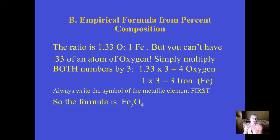What you can do is a little mathematical trick. Since we came up with a third, multiply both numbers by 3 and you'll get a small whole number ratio. When I multiply one and a third by 3, I get 4. The most common mistake is people forget to also multiply the 1 iron by 3. So now I have my subscripts. We always write the metallic element first, then the non-metal. The result is Fe₃O₄ — one of the two forms of iron oxide.